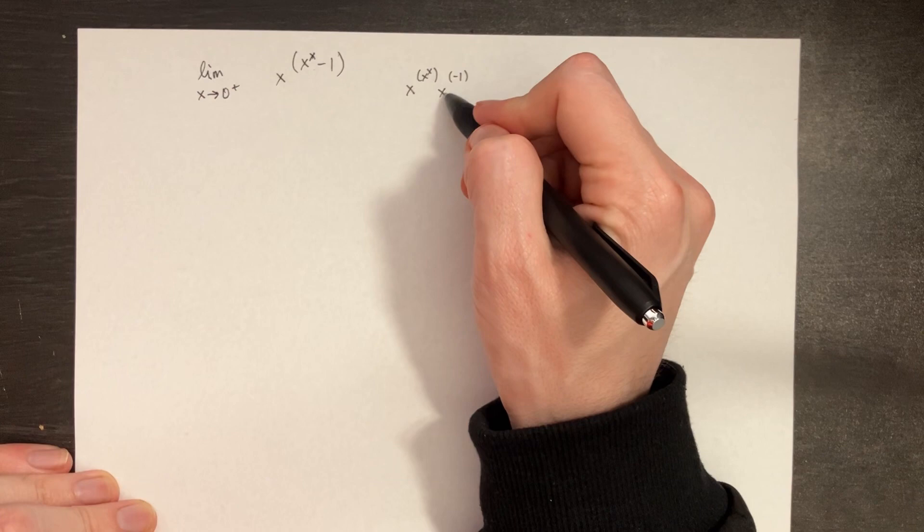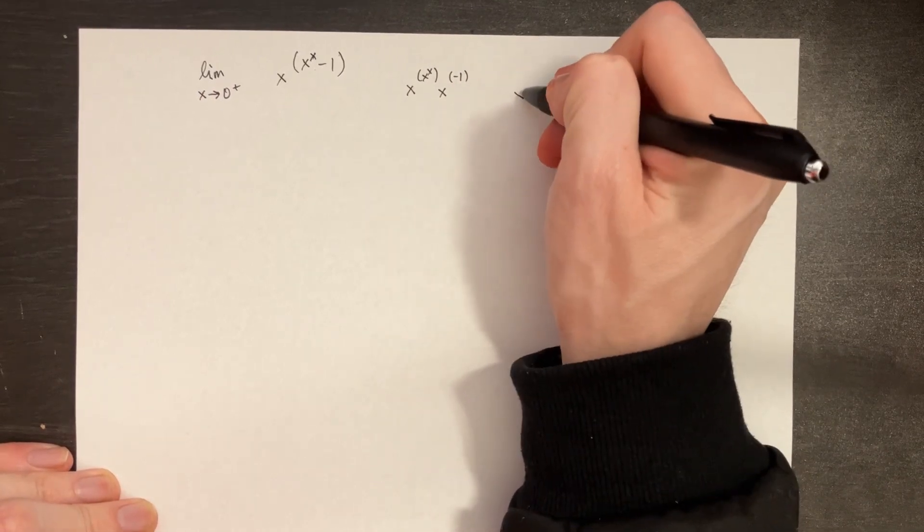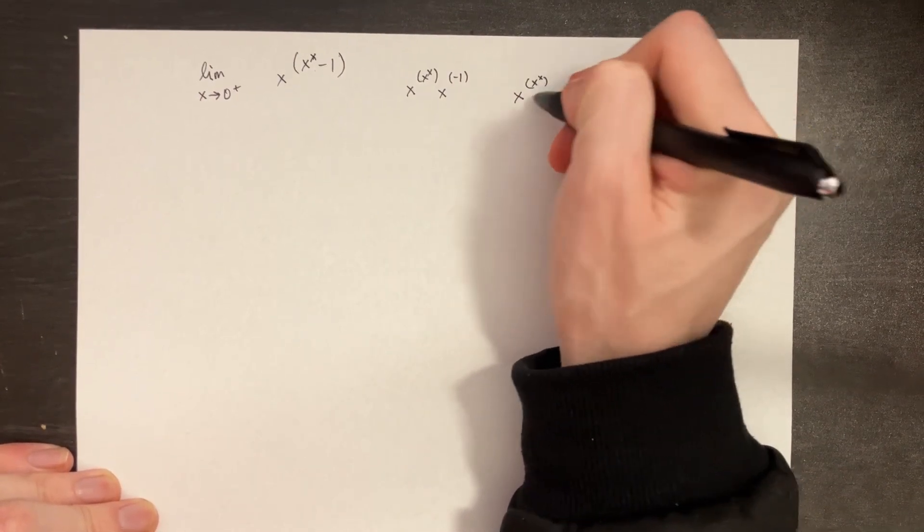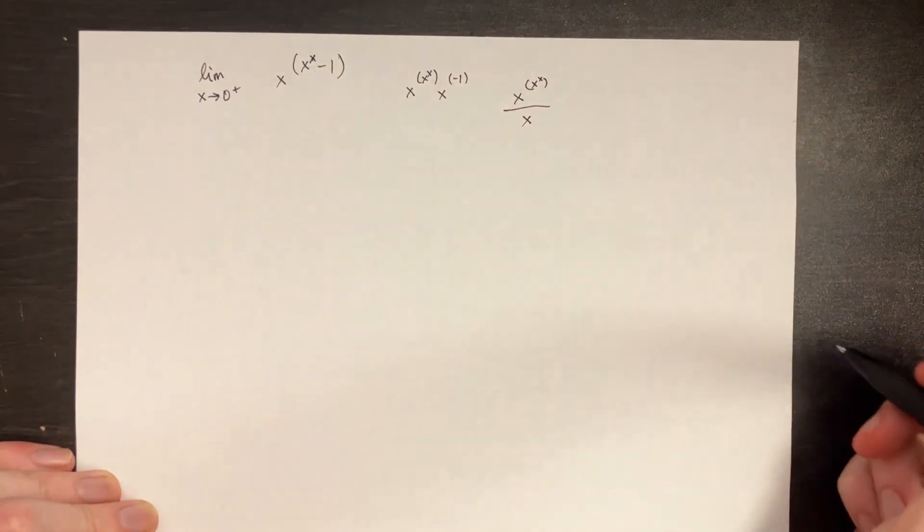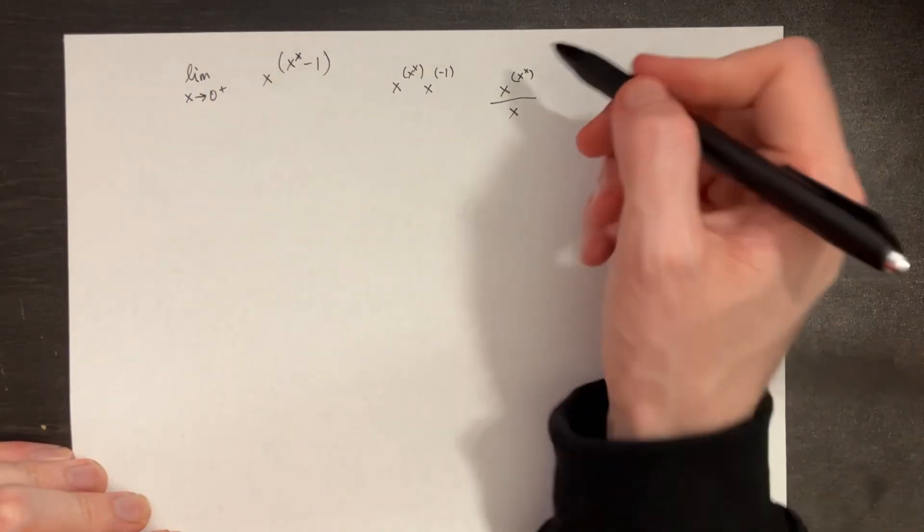So if we have x to the power of negative 1, that really means that we have x to the power of x to the x divided by x. So that simplifies things a bit.